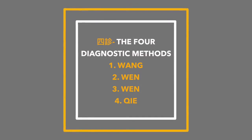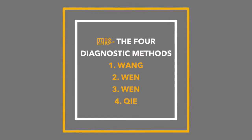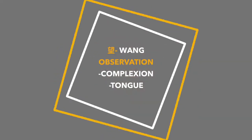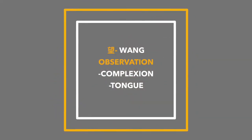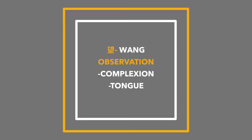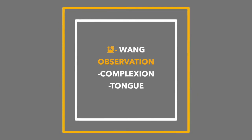Classically there are four diagnostic skills known as Wang Wen Wen Jie. Wang stands for observation — we observe the complexion of the patient's face. Is it more red, like a person who sweats easily and gets hot? Or is it very pale? Are there spots anywhere? Is there a certain color like green or yellow? The second thing we look at is the tongue — the tongue size, the tongue coating, any little red spots, and any scalloping on the sides.